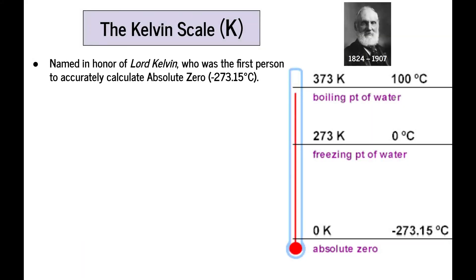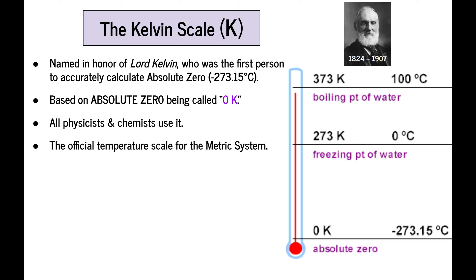The Kelvin scale was named in honor of Lord Kelvin, that's a cool title, who was the first person to accurately calculate the value of absolute zero. I'll note there that sometimes we add the decimal 0.15 onto it. That's a little bit more precise, but sometimes you only need to use whole numbers like in this class. The Kelvin scale is based on absolute zero being called zero Kelvin, so there's no negative numbers here. It's either zero or it's a positive number. All physicists and chemists use the Kelvin scale, along with Celsius, to measure the temperature of substances. Kelvin is the official temperature scale for the metric system, although again, Celsius is accepted as well.